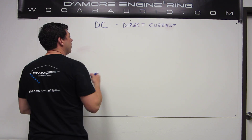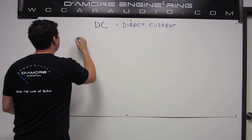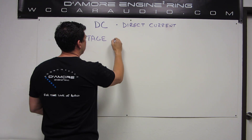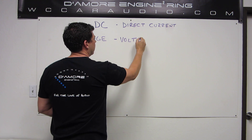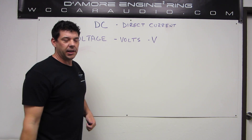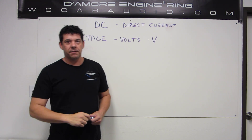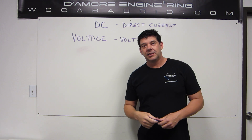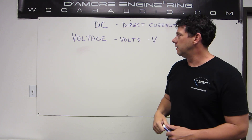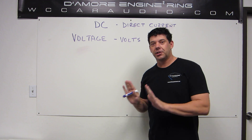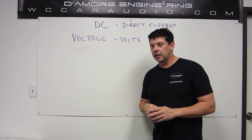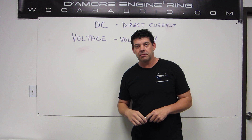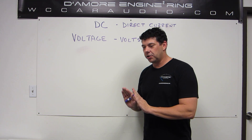Direct current — we have a couple different terms here. Of course the one that we all know: voltage. Voltage is measured in volts, the symbol is capital V, and voltage is named after an Italian physicist, Alessandro Volta, who lived in the mid 1700s. Voltage is push — it's like a force. Imagine a conductor; a piece of copper has a bunch of electrons on it that are able to move about — that's why copper conducts electricity.